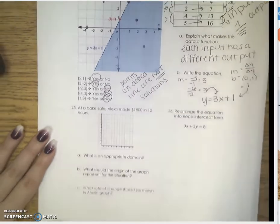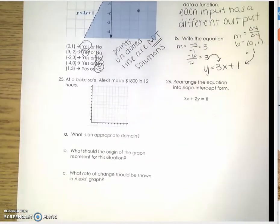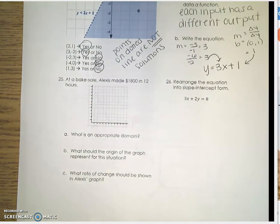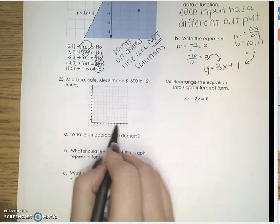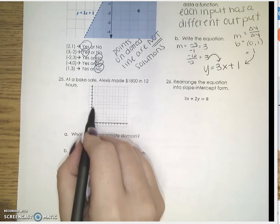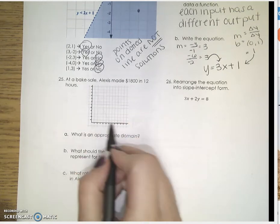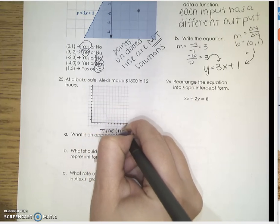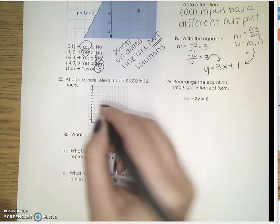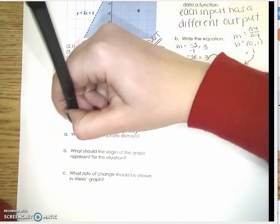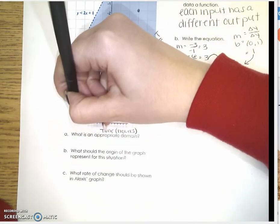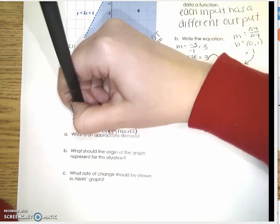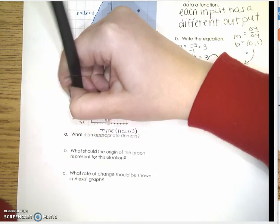Number 25 says at a bake sale, Alexis made $1,800 in 12 hours. So we can go ahead and graph this. We need to determine what my x variable would be and my y variable. My x is going to be my time in hours. My y variable is going to be the money earned in dollars.